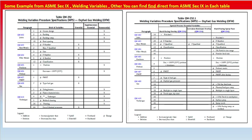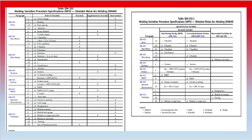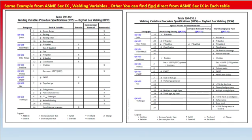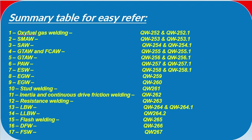Similarly, QW-253 and QW-253.1 are for SMAW. If you go to ASME Section IX, you can find all these variables mentioned there. For example, QW-402 covers joints and QW-403 covers base metal — each paragraph has different requirements. Which variables are essential is marked clearly, and which are non-essential is also indicated. If you go to QW-254 and QW-254.1, you can understand the requirements for essential, non-essential, and supplementary essential variables to be elaborated in the WPS.